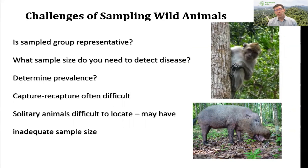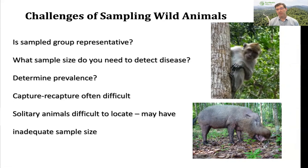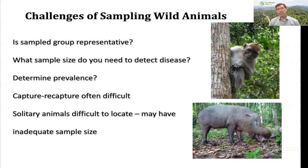In terms of the scientific question you're asking, sample size becomes very important. If you're asking epidemiologic questions about the prevalence of a disease in a population, or whether one population of animals has a higher prevalence than another, it requires a certain sample size to have statistical confidence that you're going to find the disease if it's there and enough power in your analysis to compare populations. Sometimes wildlife species are solitary, live in very small groups, and it's very challenging to get an adequate sample size — sometimes you just have to discuss those limitations when writing up your results.